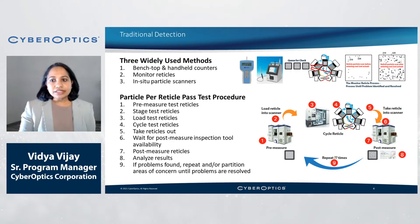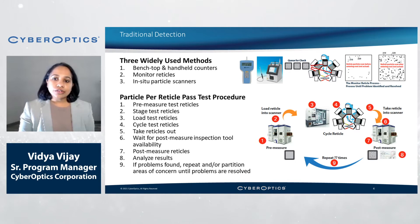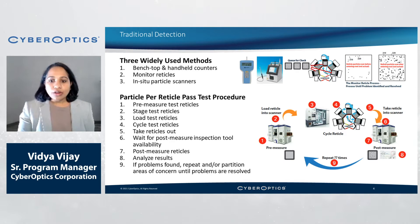Maximizing yield and tool uptime in photolithography environments requires best-in-class practices for a contamination-free process environment. Unfortunately, identifying precisely when and where airborne particles originate is challenging with traditional methods. There are three widely used methods for particle detection in photolithography environments: benchtop and handheld particle counters, monitor reticles, and in-situ particle scanners. All three of these traditional methods have substantial drawbacks.